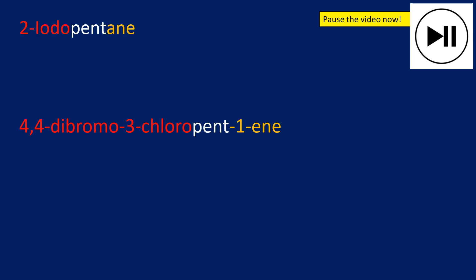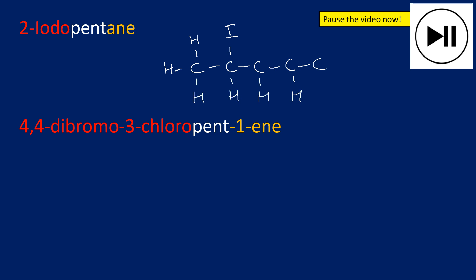Now let's draw molecules from their names — pause to try it yourself. 2-Iodopentane: pentane is a five-carbon chain, numbered one to five, with an iodine on the second carbon. The remaining bonds are all hydrogens. Remember the rule: every carbon must always have four bonds — double-check you haven't missed a hydrogen.